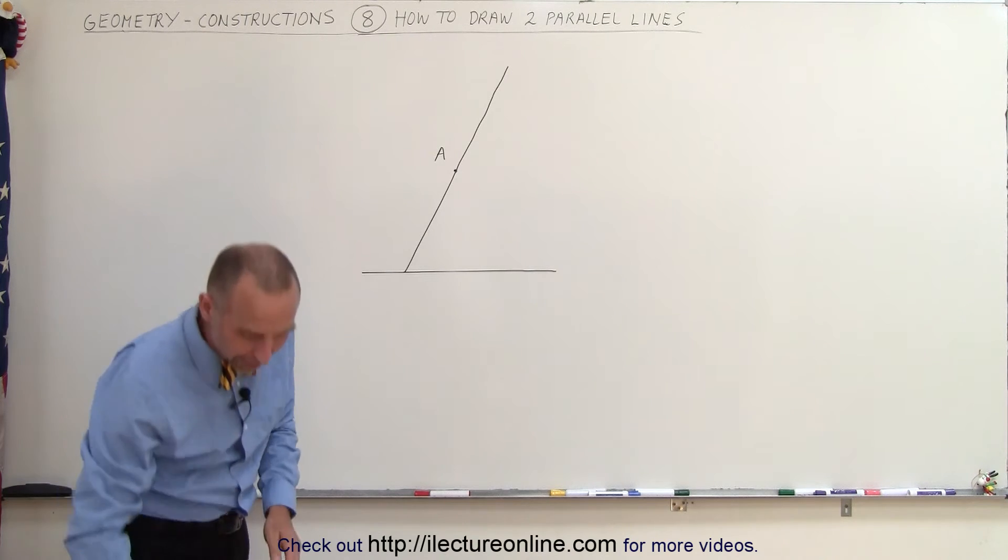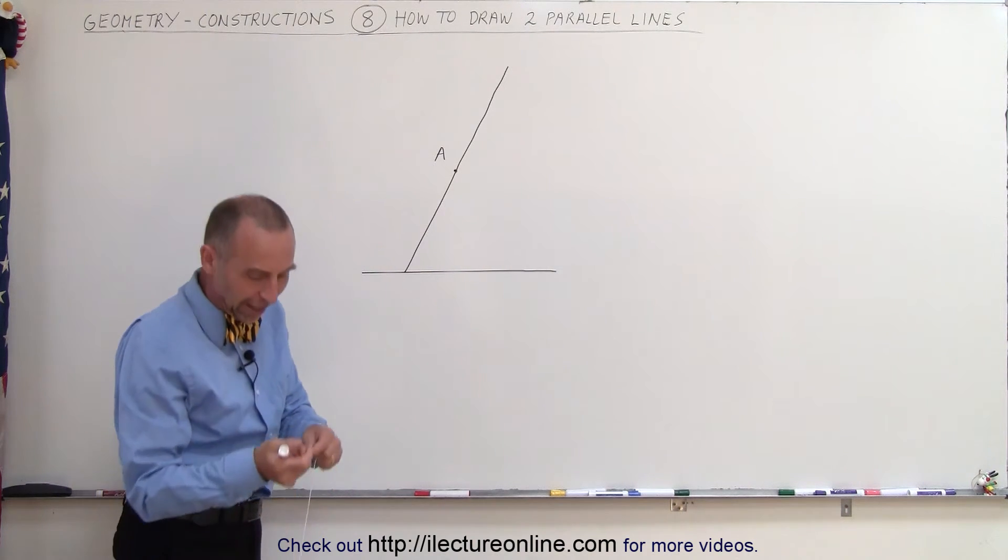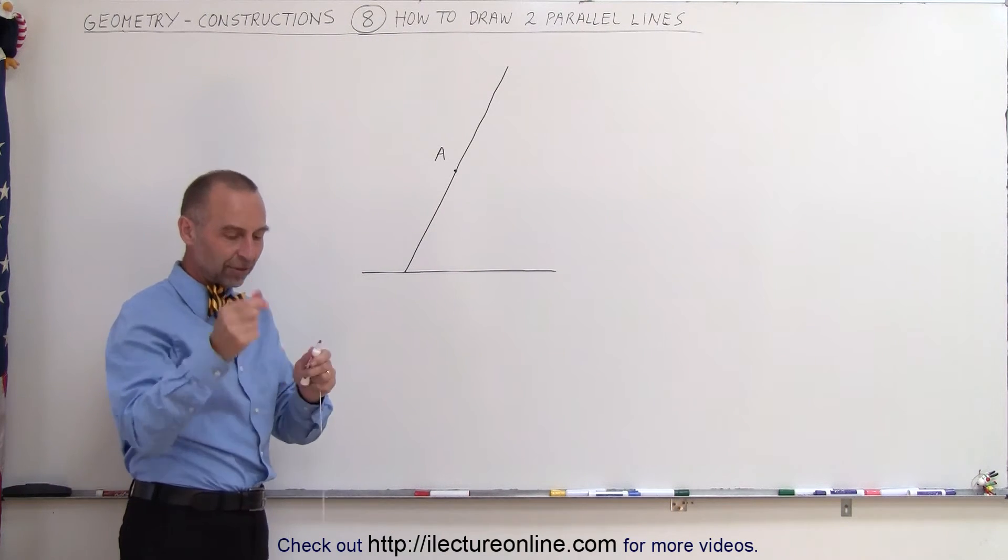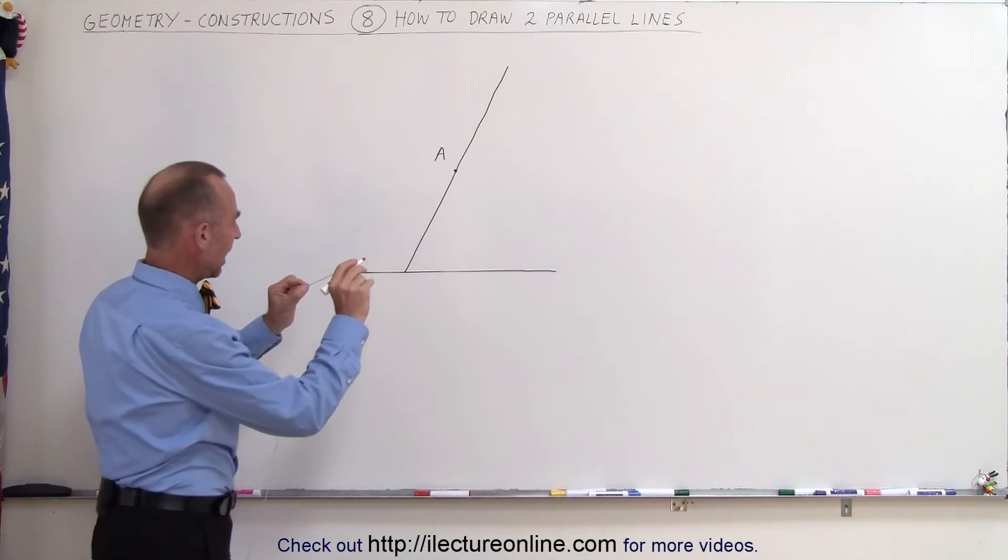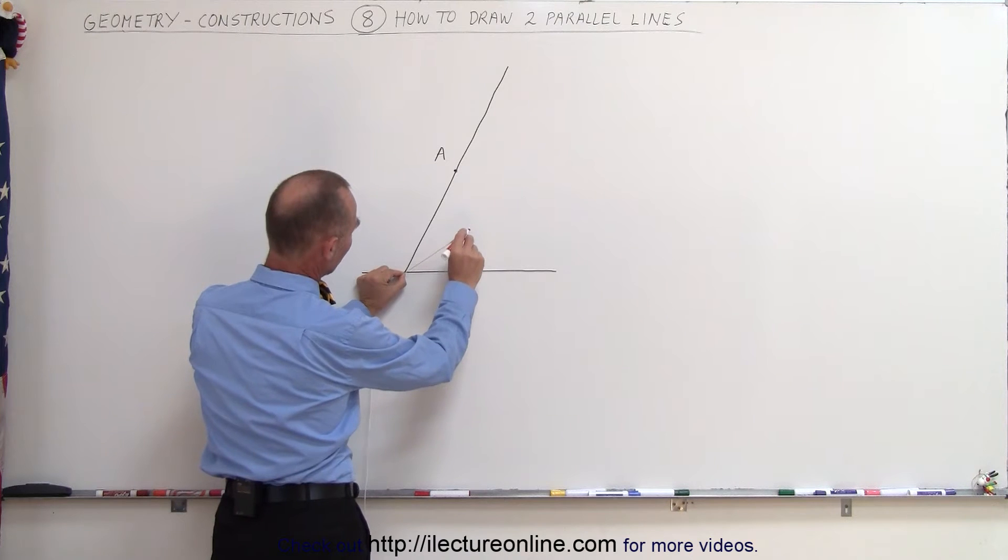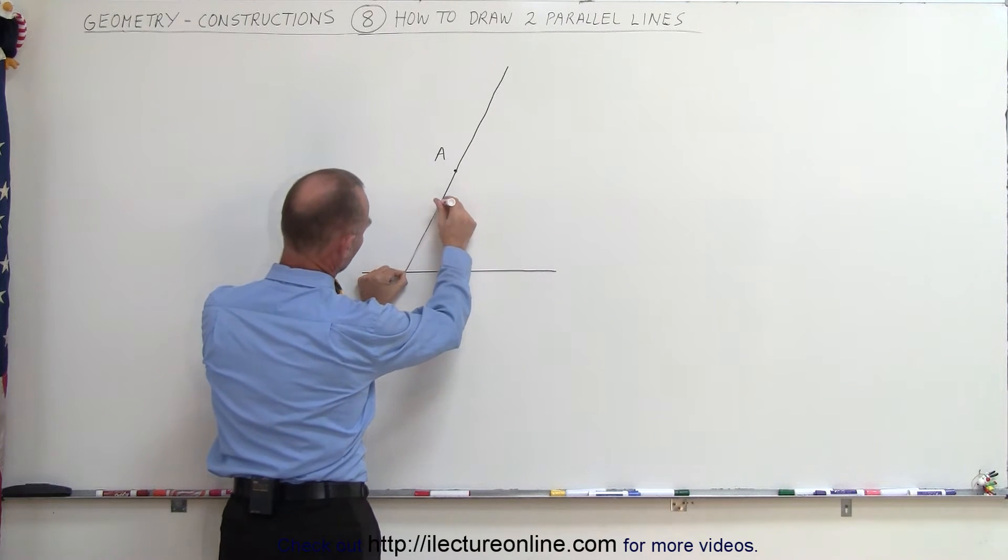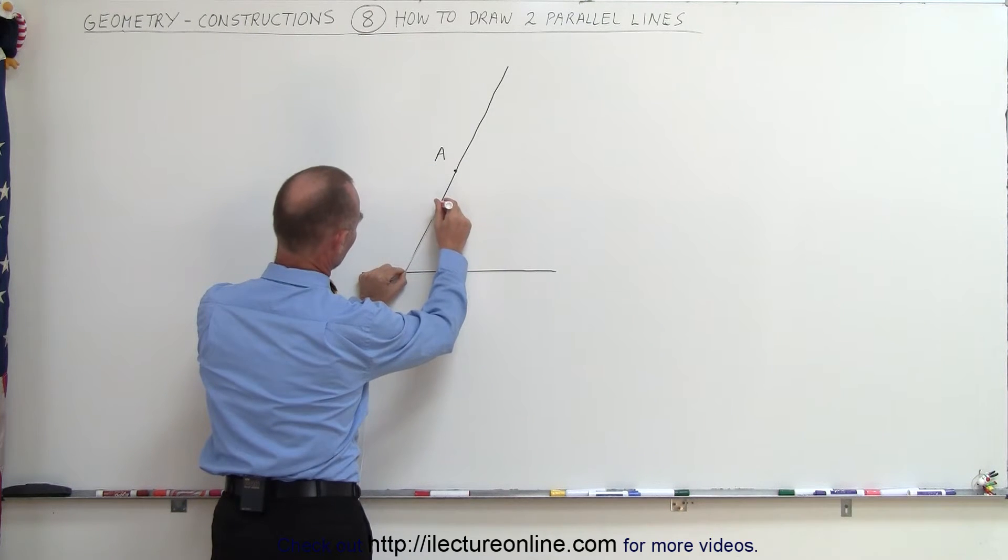And then what we're going to do is we take a compass. Now since I don't have a compass, I'm going to use one of these - it's a string with a loop on it. And I will come to this point right here where the two lines meet and we draw an arc. There's our first arc.